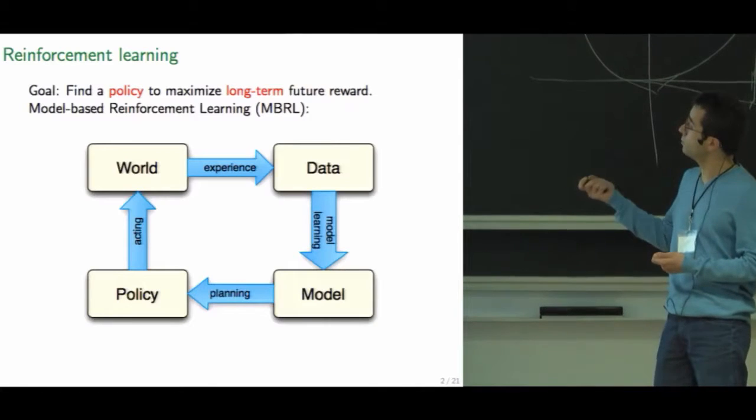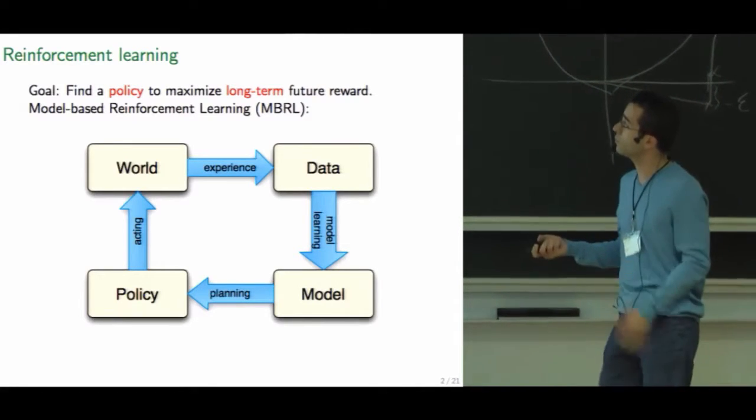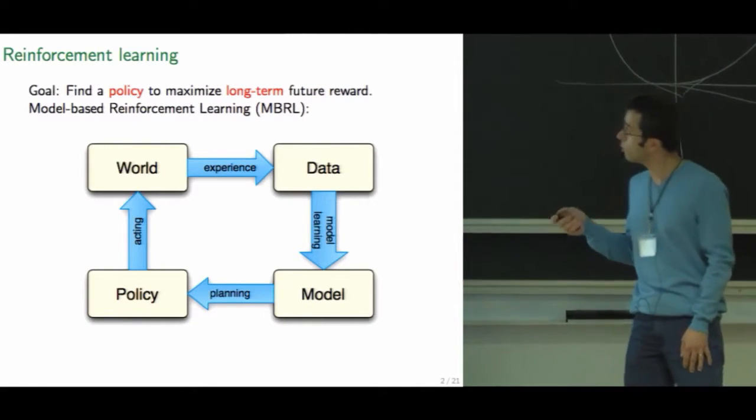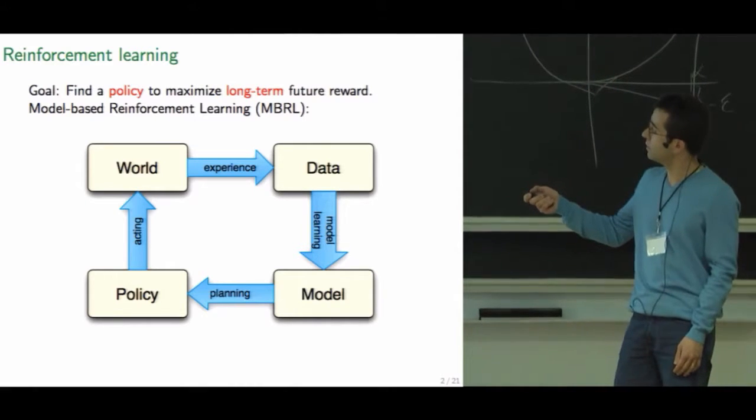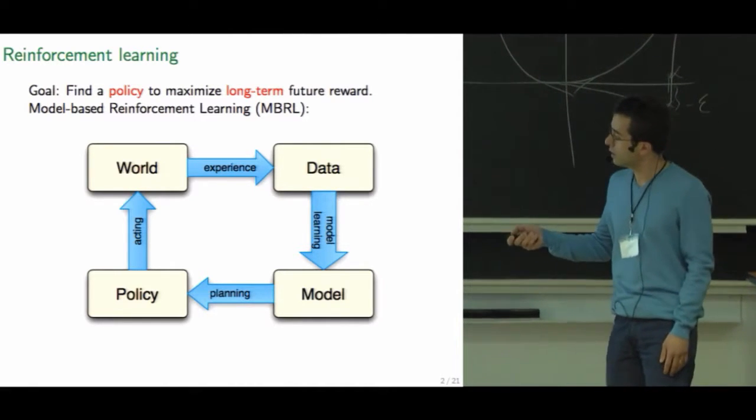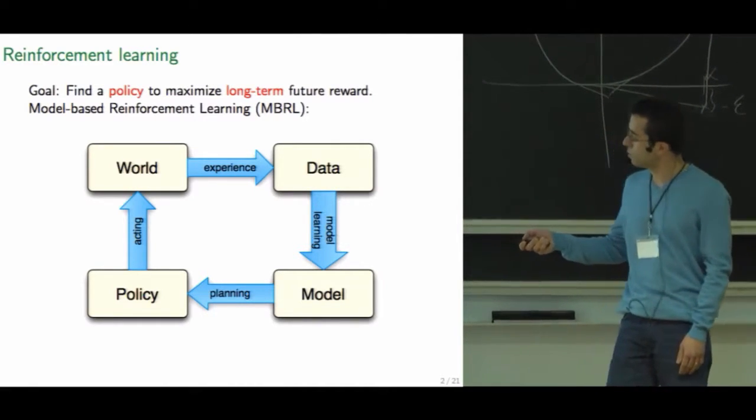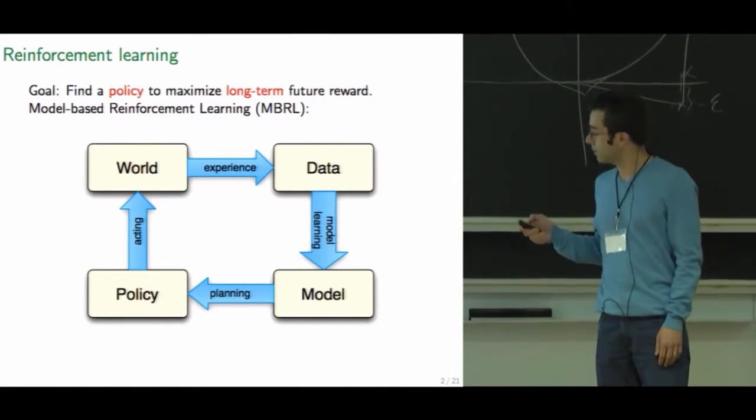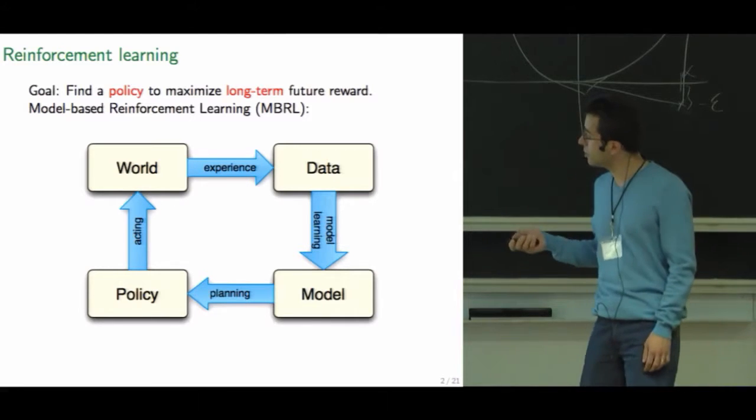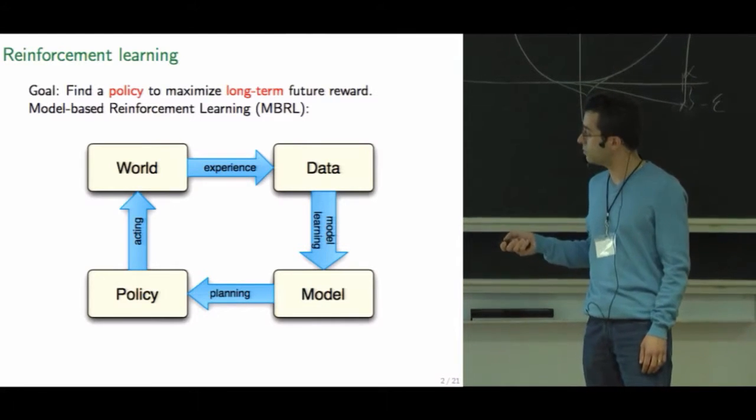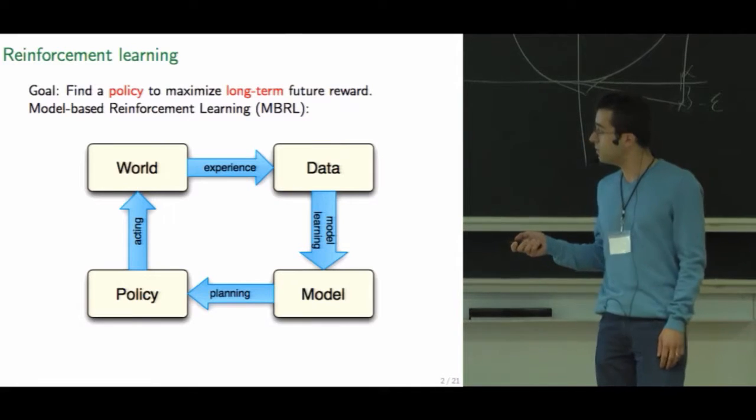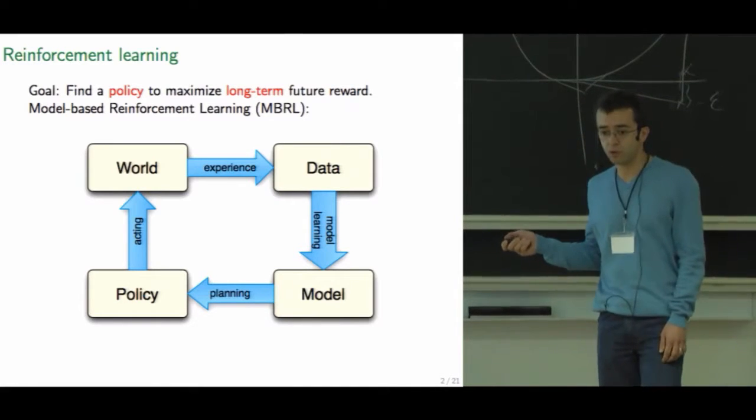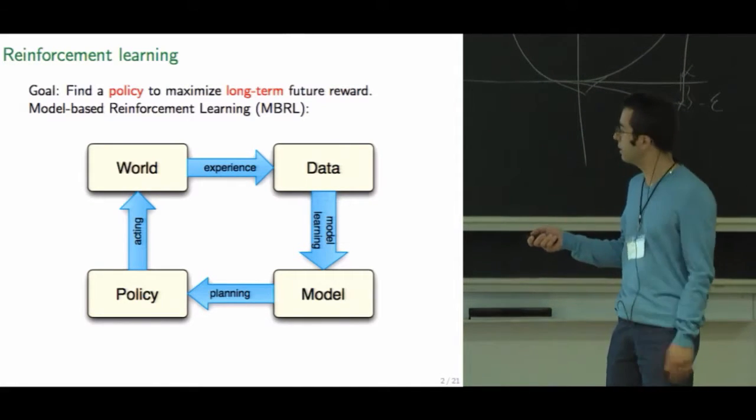One way to try to do that is through model-based reinforcement learning, where we go through the cycle of getting some data from the world, constructing a model, constructing a policy from the model and then deploying it in the real world. Here today I'm going to talk about this planning step. What does planning mean? It means computing a policy from a model that has been handed over to us.